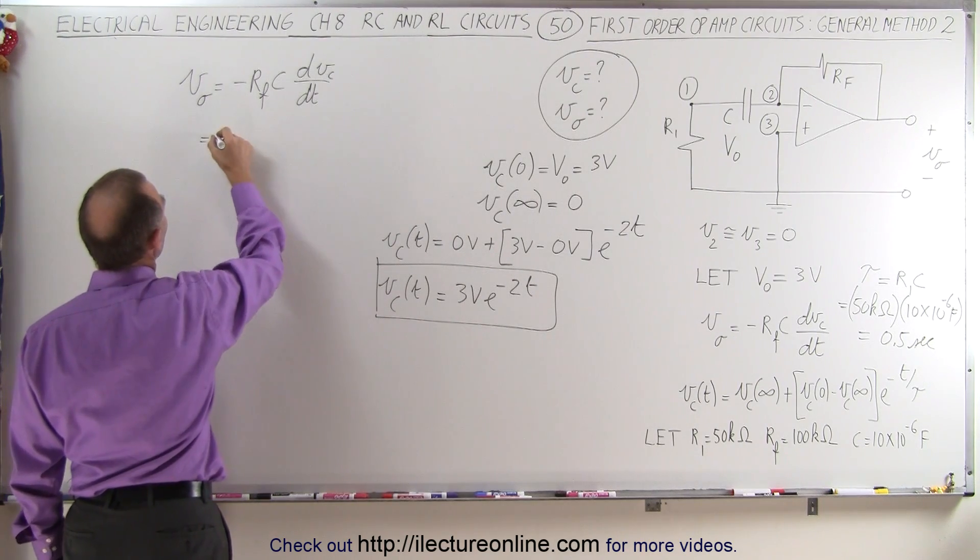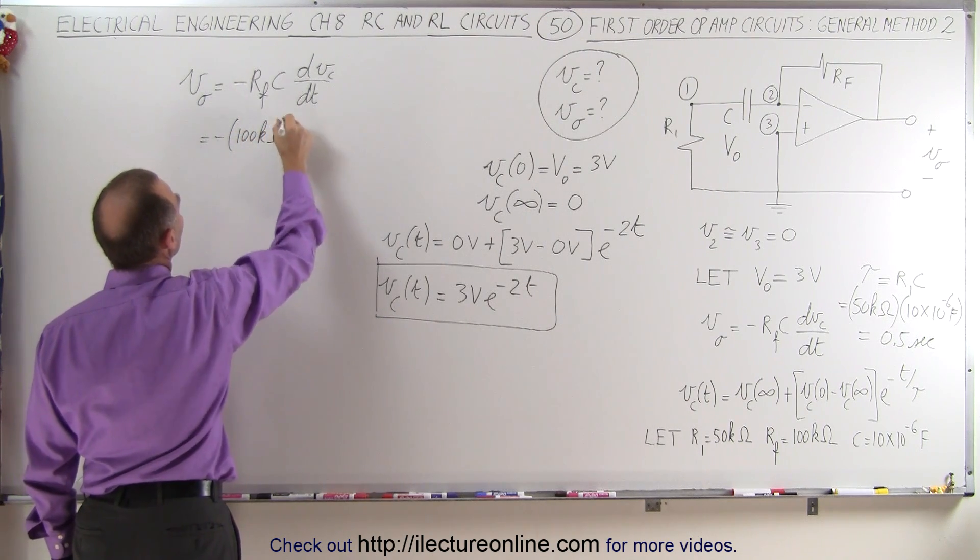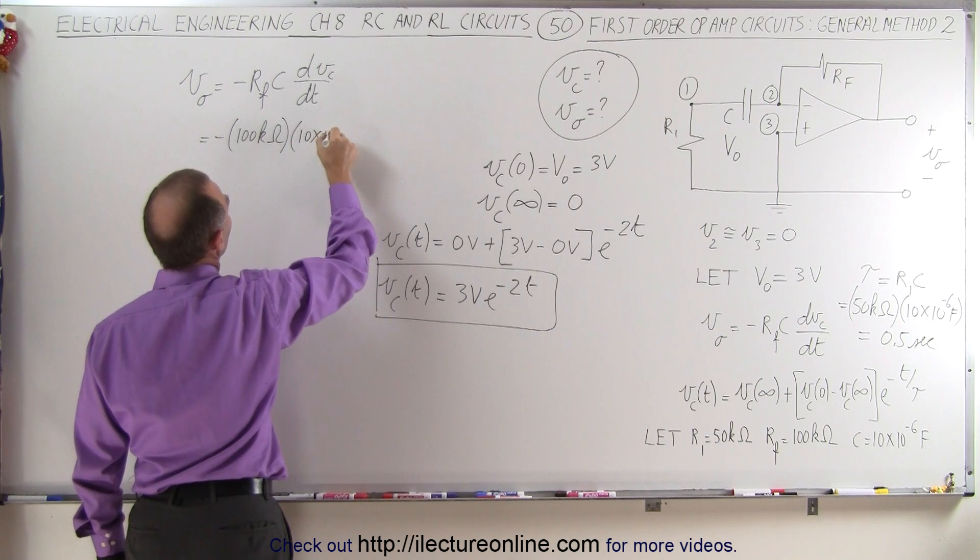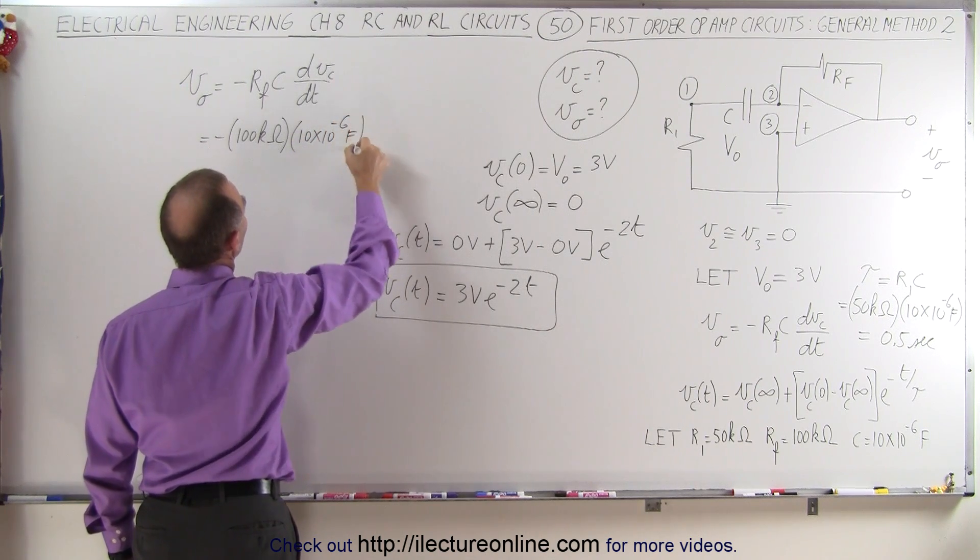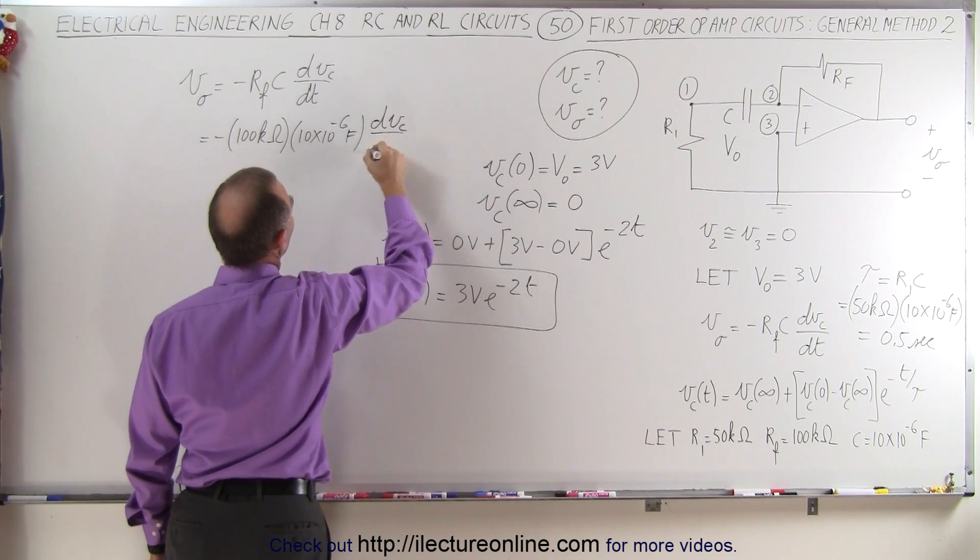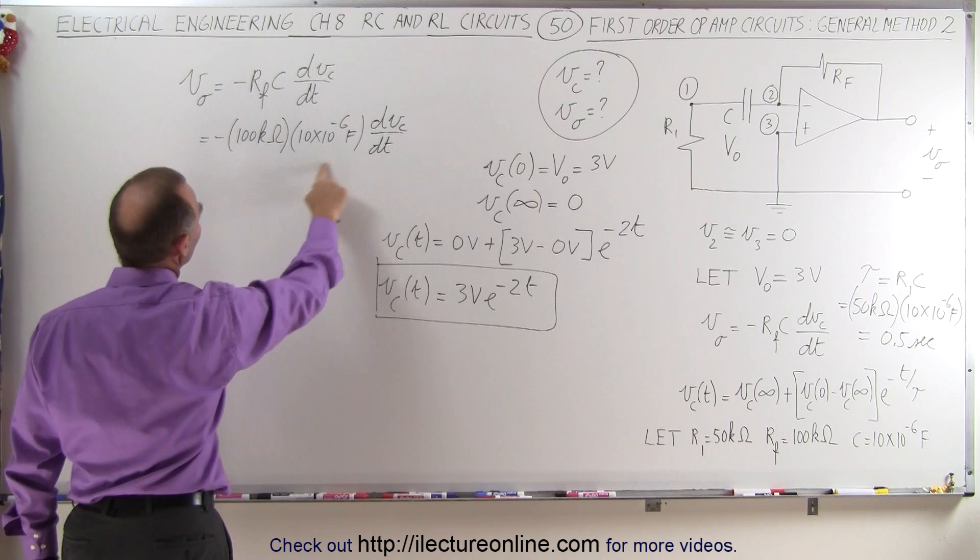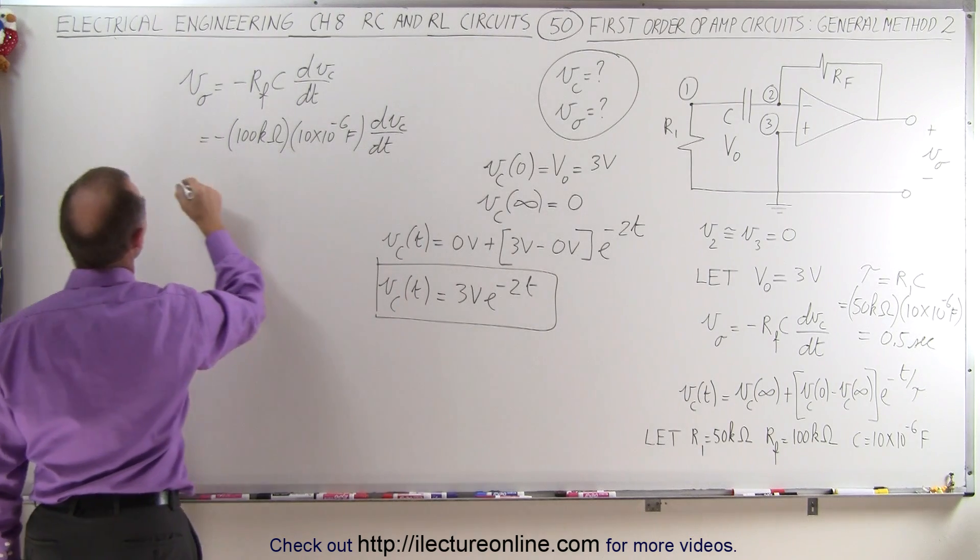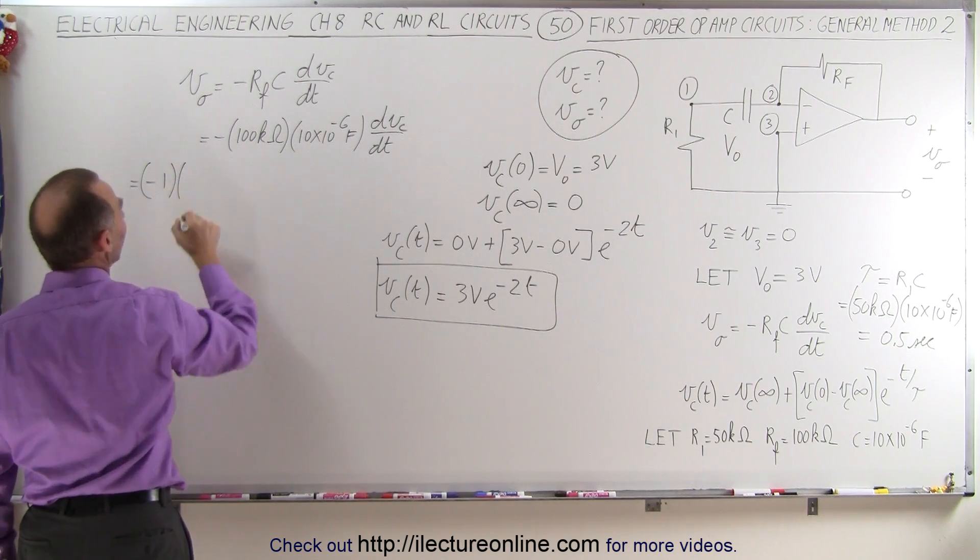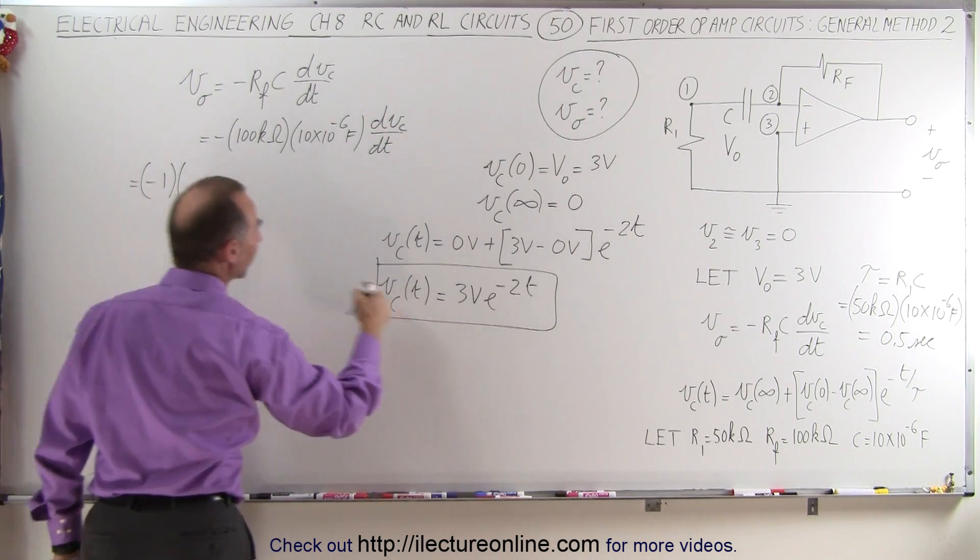So this is going to be equal to minus 100 kilohms times 10 times 10 to the minus 6 farads, times dV across the capacitor dt. But this here, that's going to be equal to 1, so this becomes equal to minus 1 times the derivative of this, which is minus 2 times 3.